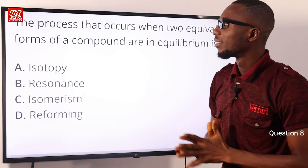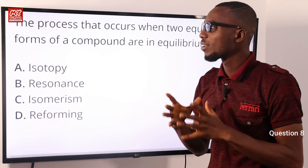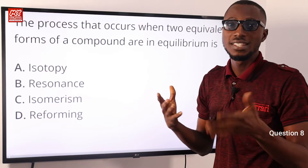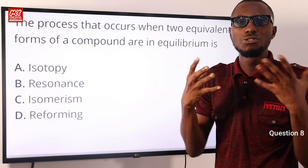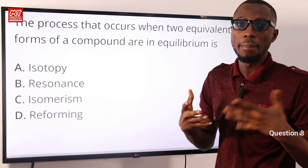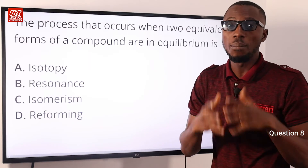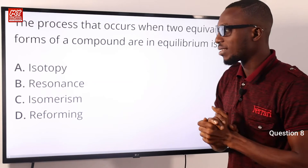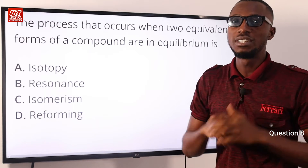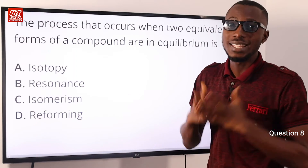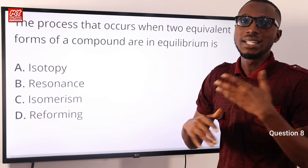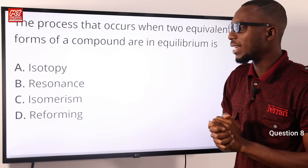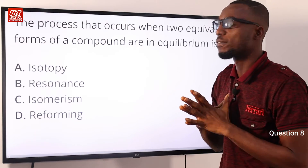Question eight: the process that occurs when two equivalent forms of a compound are in equilibrium is what? This is actually resonance. Resonance is involved when more than one Lewis structure can be drawn for a particular molecule — for example, benzene. Isotopy refers to the same atomic number but different neutron numbers giving different atomic weights. Isomerism is the same molecular formula but different structures. Reforming refers to catalytic reforming to improve the quality of hydrocarbons like petrol. The correct option is option B for resonance.